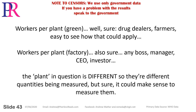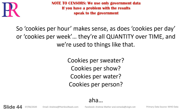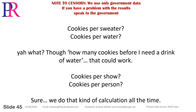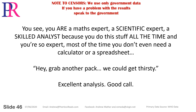Workers per plant — the green kind — sure, drug dealers, farmers, easy to see how that could apply. Workers per plant — the factory — also sure, any boss, manager, CEO, investor. They're different quantities being measured but sure, it could make sense to measure them. So cookies per hour makes sense, as does cookies per day or cookies per week — they're all quantity over time. Cookies per person — we do that kind of calculation all the time. You see, you are a maths expert, a scientific expert, a skilled analyst, because you do this stuff all the time.